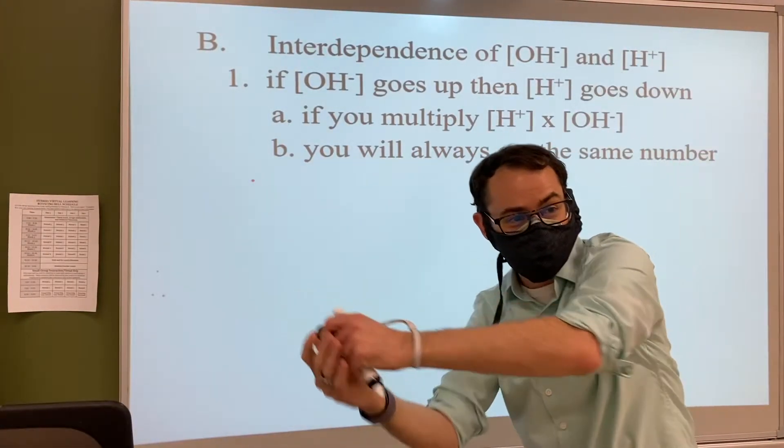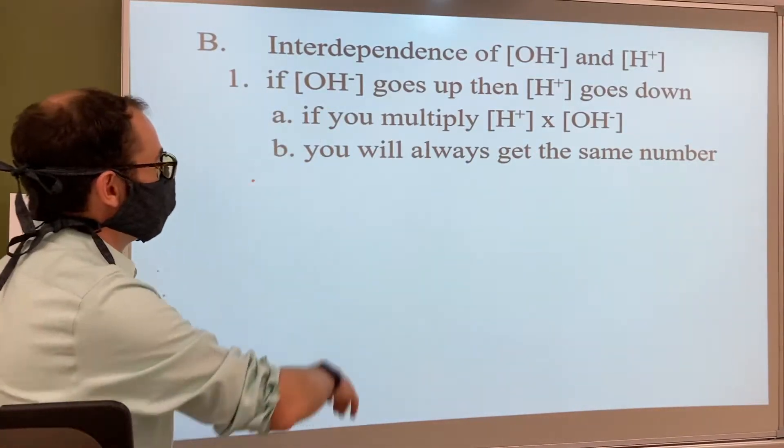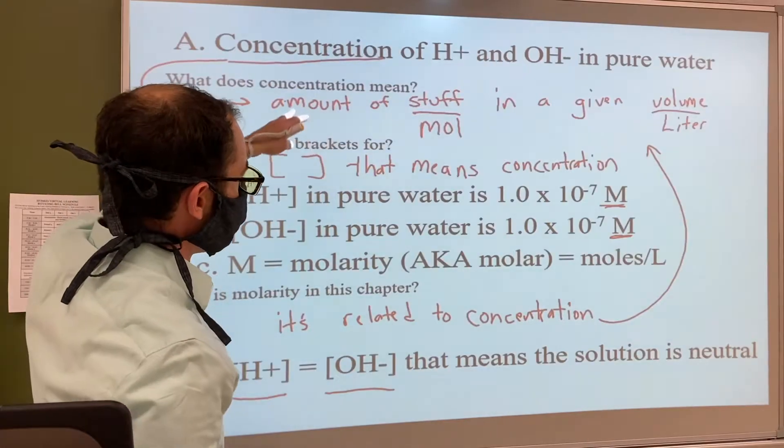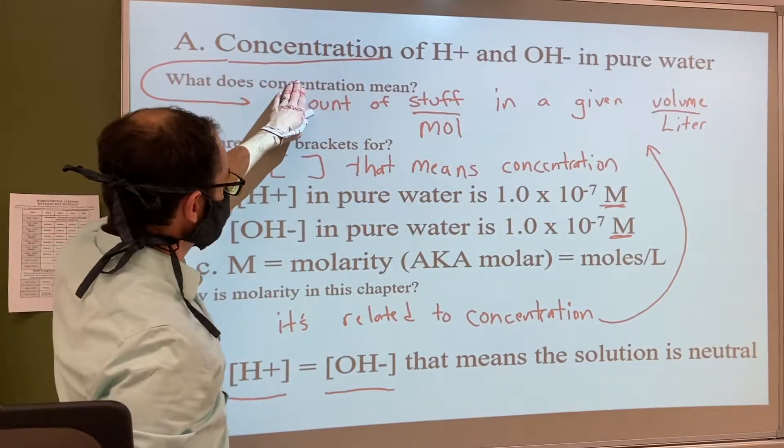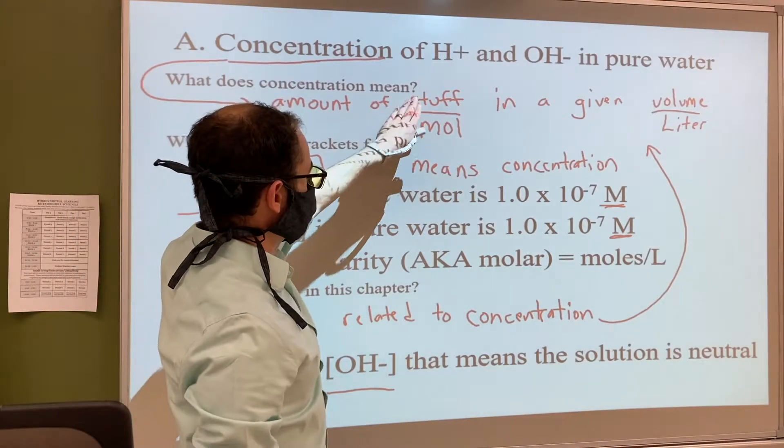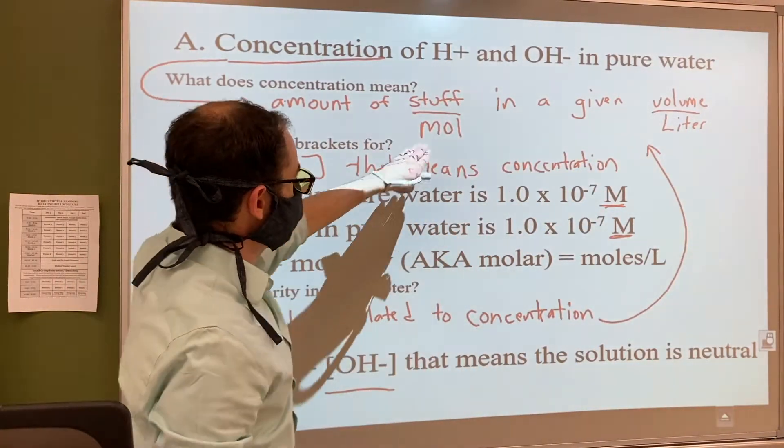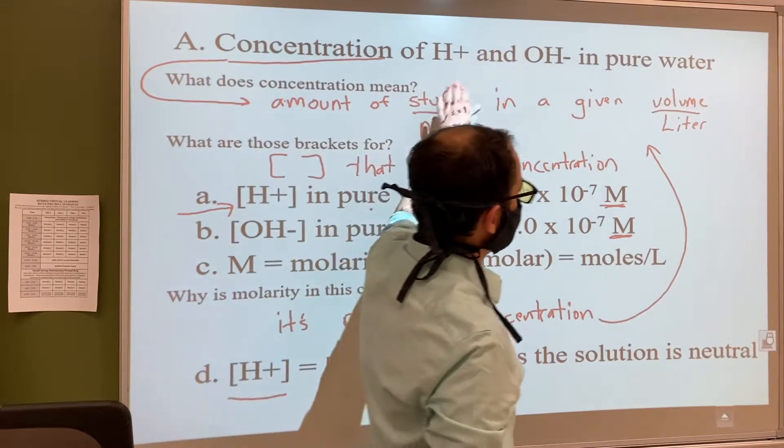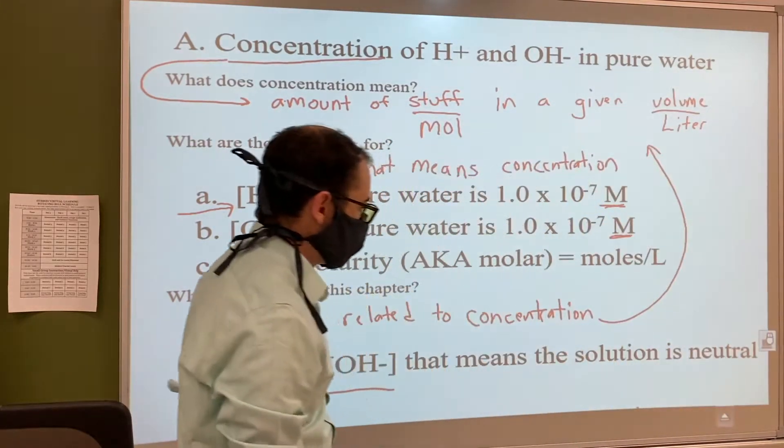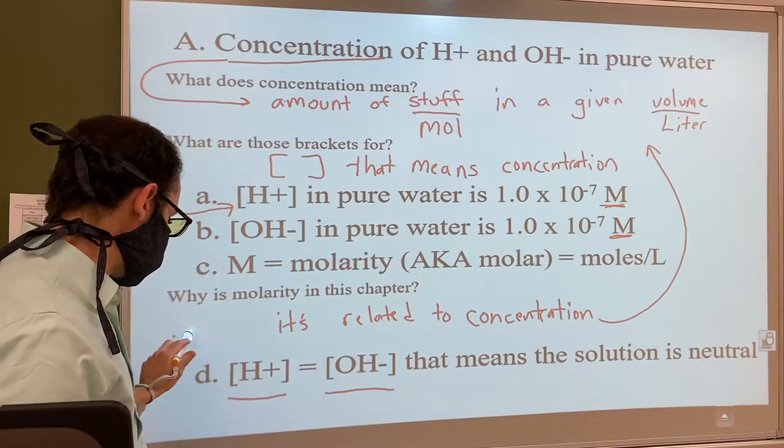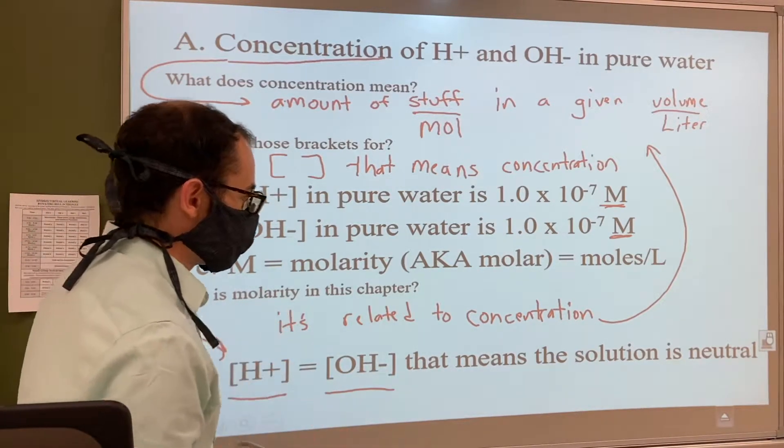Some of the stuff up here we've talked about before. Going back, we were talking about concentration and how it was stuff in a given volume. We also talked about molarity, which is the number of moles of stuff in a given volume, in this case liters. To talk about concentration we use the brackets. That was what we talked about last time.